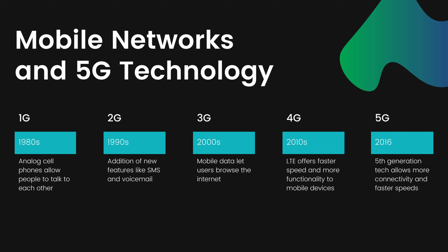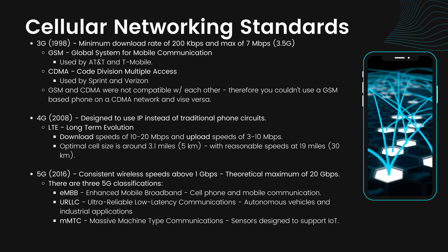Starting with 2G, which happened basically in the 90s, they added new features like SMS and voicemail. 3G, which occurred in the early 2000s, basically allowed mobile data and allowed users to browse the internet. 4G, which happened in the 2010s, introduced LTE offering faster speeds and more functionality. Then 5G, introduced in 2016, is the fifth generation and allows more connectivity and faster speeds.